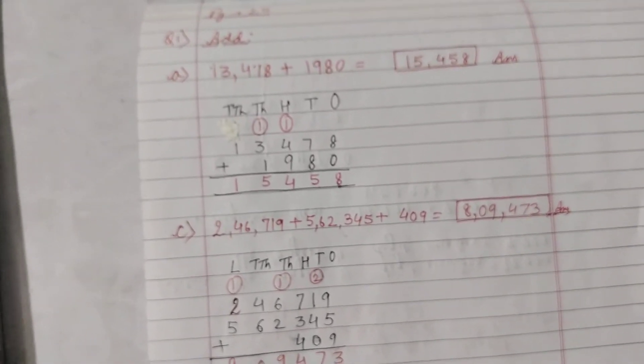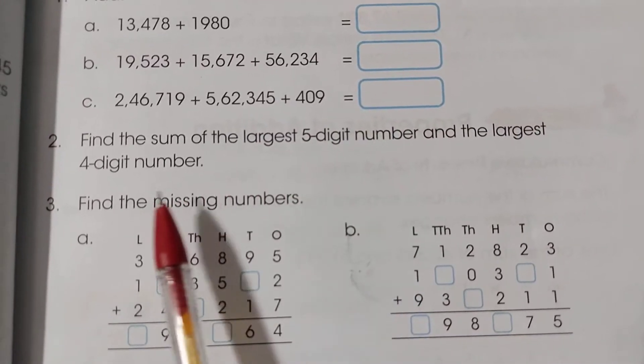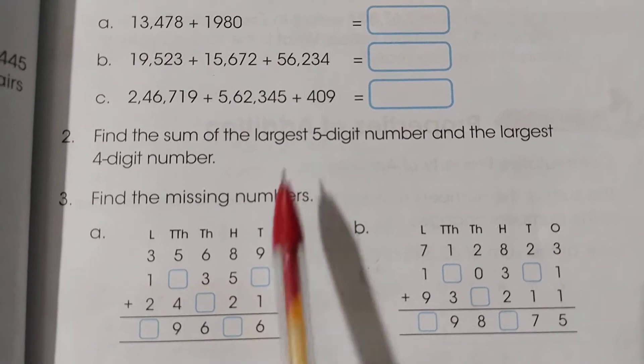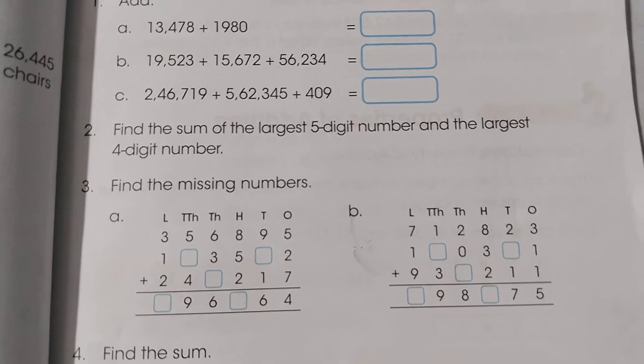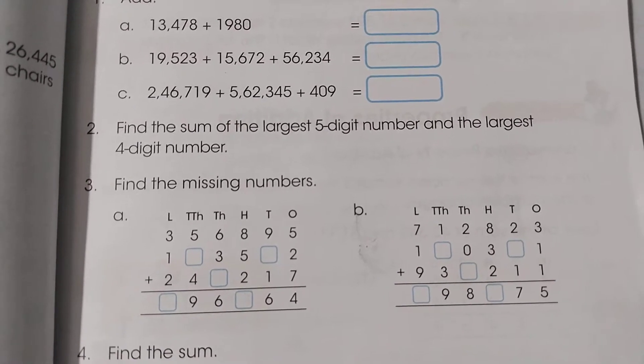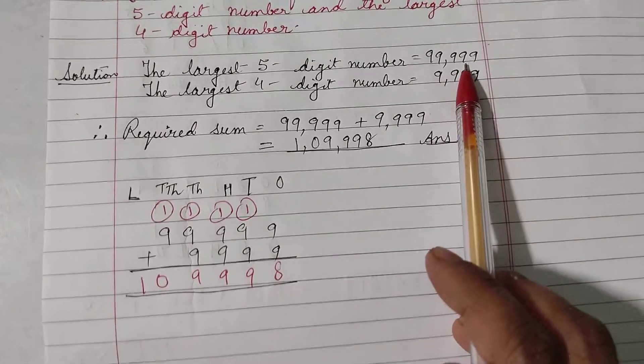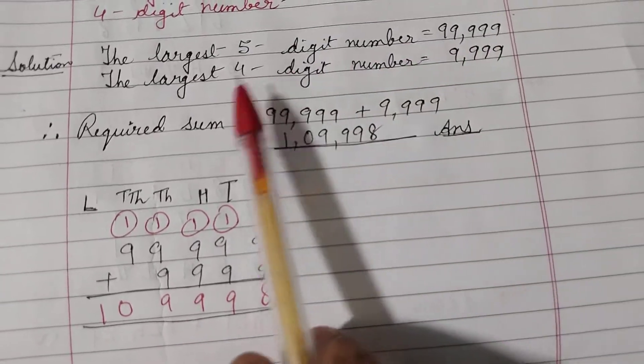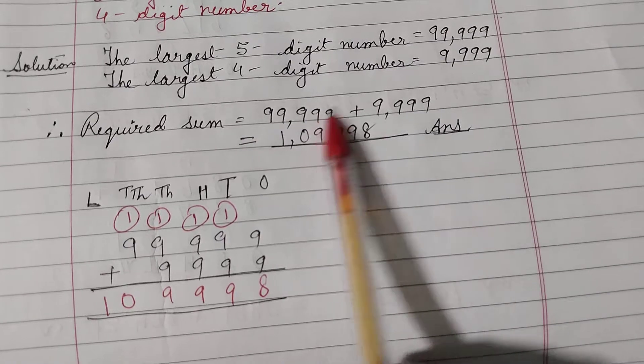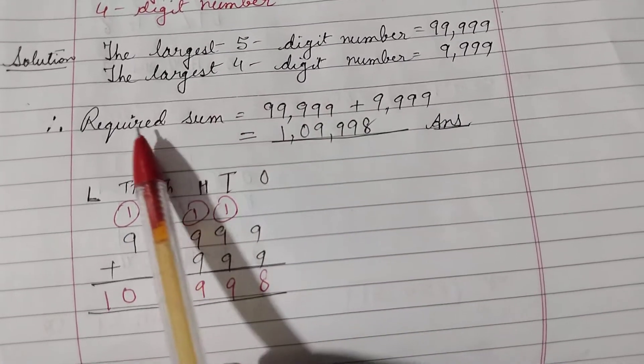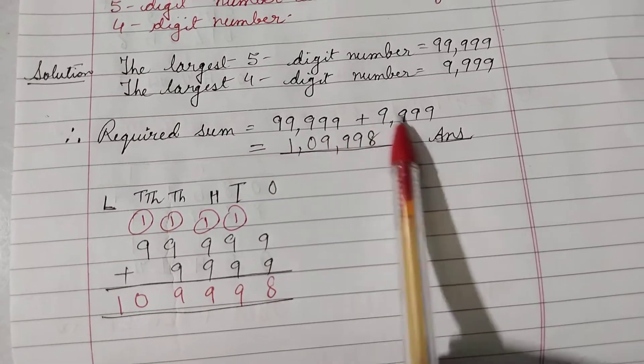Moving to question number 2. Find the sum of the largest 5 digit number and the largest 4 digit number. So, children, first of all, we need to find the largest 5 digit number and the largest 4 digit number. The largest 5 digit number is 99,999 and the largest 4 digit number is 9,999. So, we have to add these 2 numbers. So, you write here. Therefore, required sum equal to, add these 2 numbers.